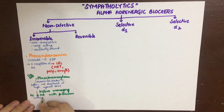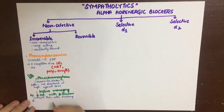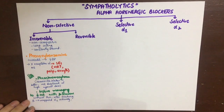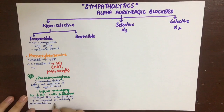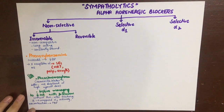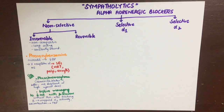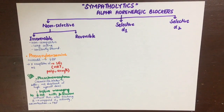A second use of phenoxybenzamine is that before managing tachycardia with beta blockers, we first use alpha blockers. If beta blockers are given first, the alpha-1 effects become predominant and beta-2 effects are lost, causing vasoconstriction and worsening hypertension. So we give the alpha-1 blocker first, then the beta blocker for tachycardia.